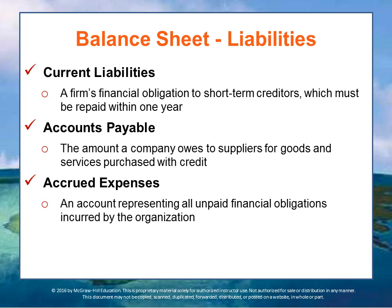Now let's look at the liability side of the balance sheet. As seen in the accounting equation, your total assets are going to be equal to your liabilities and your owner's equity. Current liabilities include the firm's financial obligations to short-term creditors — generally things that have to be paid within one year. Current means one year, while long-term liabilities have longer repayment terms of over one year.